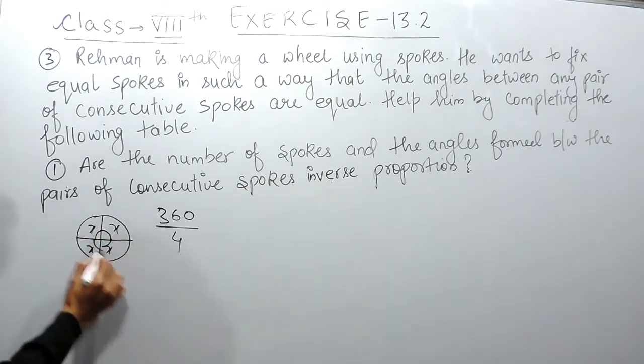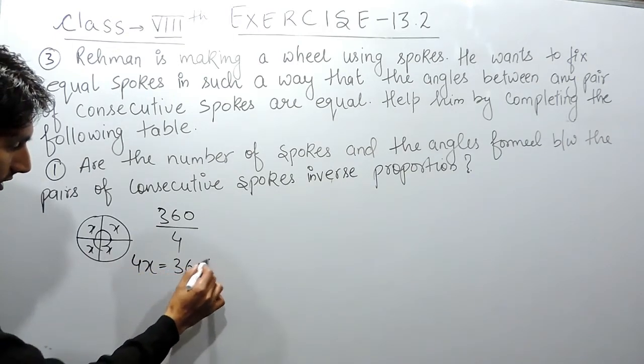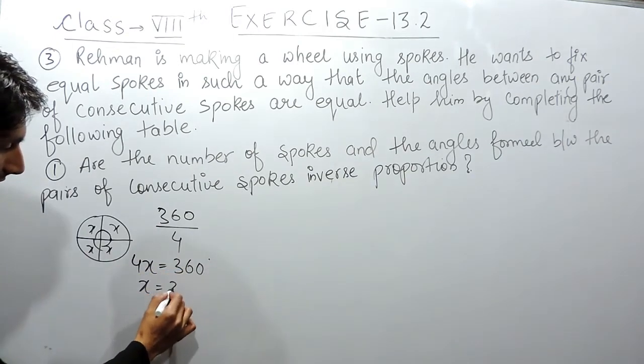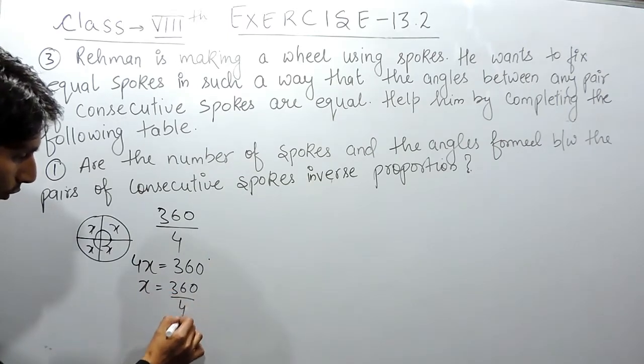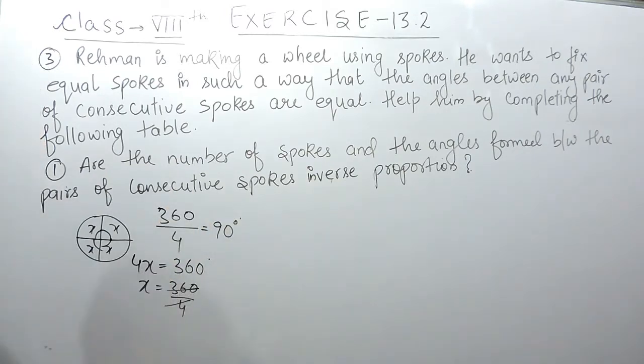x plus x plus x plus x will be 4x. So this will be equal to 360. Clearly the value of one angle will be 360 upon 4. The same here. So this should be equal to 90 degrees. When the number of spokes are 4, the angle between them is 90.